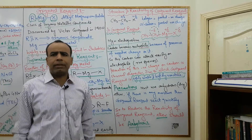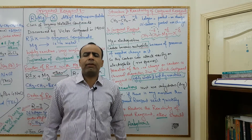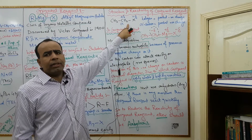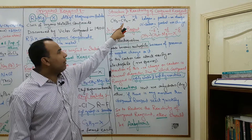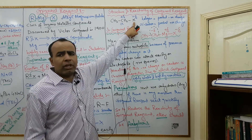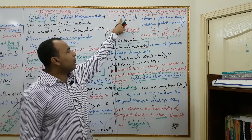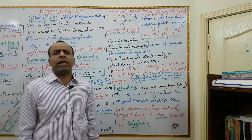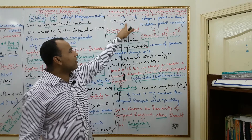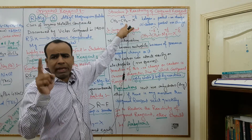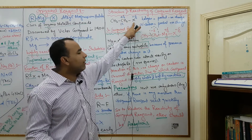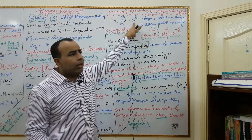Now the next topic is structure and reactivity of Grignard reagent. Consider ethyl halide — in ethyl halide, the halogen carries a partial negative charge while the carbon carries a partial positive charge. The carbon next to the functional group is called the alpha carbon. This alpha carbon contains a partial positive charge, and the halogen contains a partial negative charge.